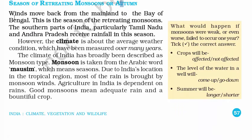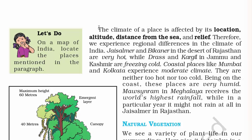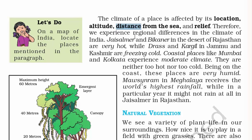After the rainy season comes autumn, which is nothing but the retreating of monsoon. The winds move back from the mainland to the Bay of Bengal. The southern part of India, particularly Tamil Nadu and Andhra Pradesh, receive rainfall in this season — they are the only states receiving rainfall while the monsoon retreats. The climate of India is broadly described as monsoon type; 'monsoon' is taken from the Arabic word 'mausam' meaning season. Due to India's location in the tropical region, most rain is brought by monsoon winds.